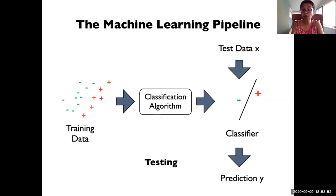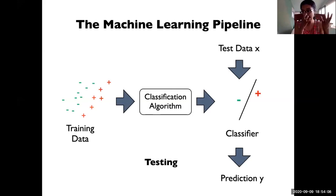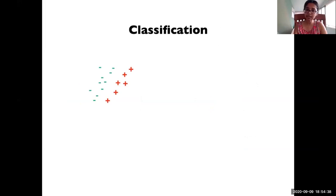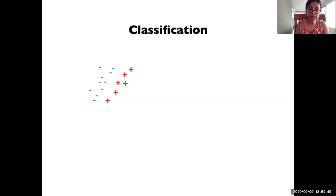Once you have a classifier, you also have to evaluate it — through a process called testing. Once you have your classifier, you have unseen test data: data you did not use for training. The golden rule of machine learning is that training and test data should always be separate. This test data goes into the classifier, out comes a prediction, and you check how accurate this prediction is. This is called the testing process.